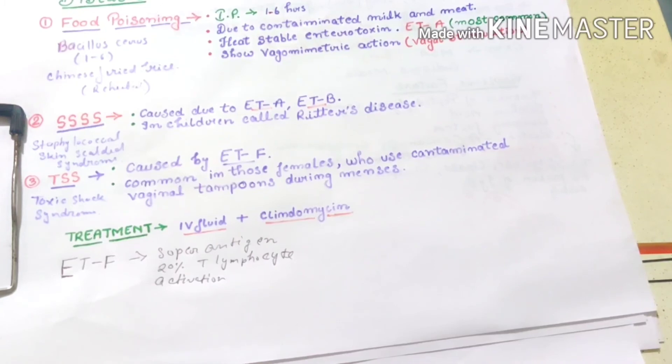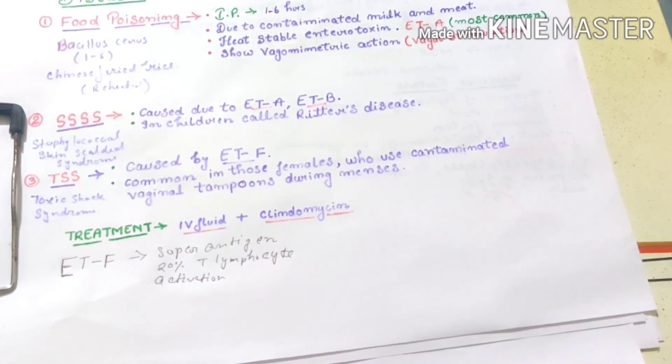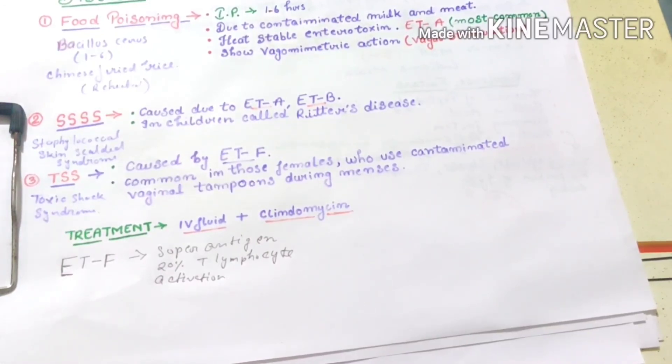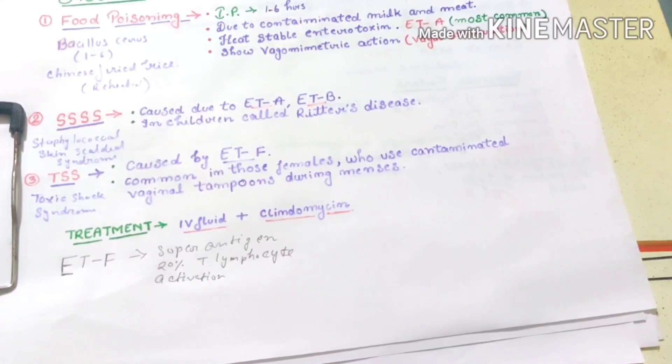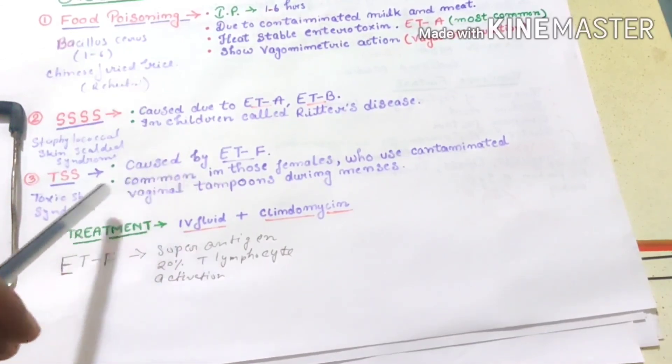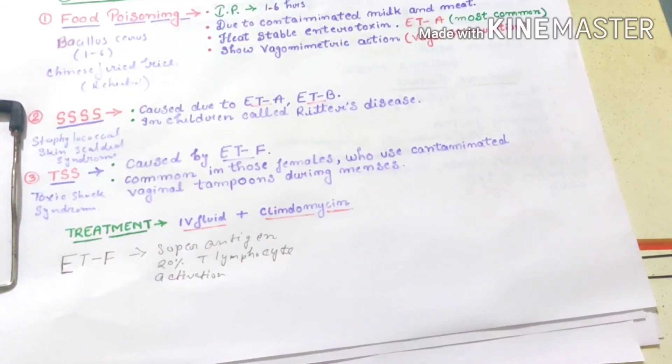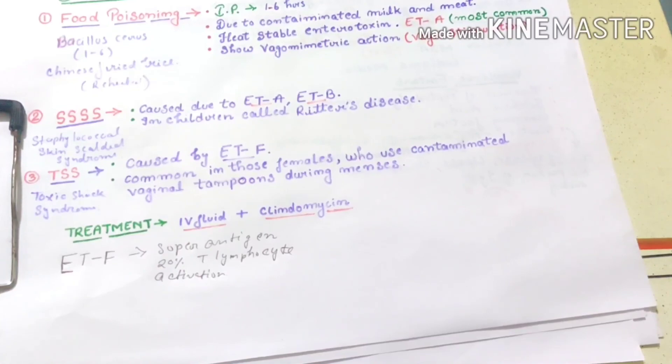The symptoms are abdominal pain, high fever, low BP, fatigue, headache, insufficient urine production, vomiting, rashes, and all. TSS is very common in females who use contaminated vaginal tampons during menses. This is all about diseases of Staph aureus. In the next video we will talk about gram positive bacilli. Thanks for watching.